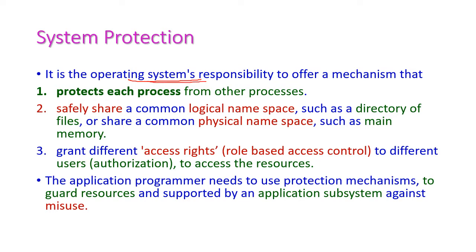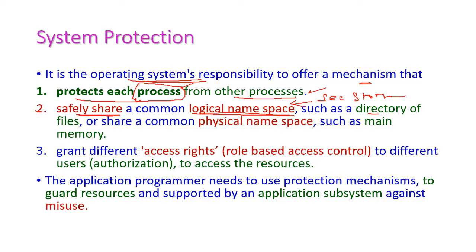It is the operating system's responsibility to offer mechanisms that protect each process in the computer system from external processes. We have to protect each and every process of our computer system. The second important goal is to safely share the common logical namespace — meaning directories and files in secondary storage — as well as the physical namespace, which is main memory.